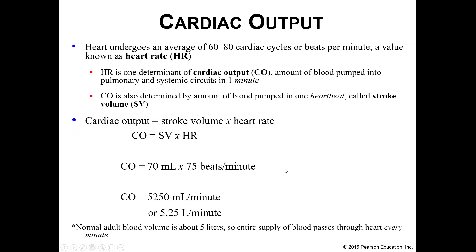Before we get there, let's talk about cardiac output. Cardiac output takes your stroke volume and multiplies it by your heart rate — this is how much blood you pump out of your heart every minute. Your normal heart rate is anywhere between 60 and 80 beats per minute. So if we take our normal 70 milliliters for stroke volume and an average heart rate of 75 beats per minute, normal cardiac output is 5,250 milliliters per minute, or 5.25 liters per minute.